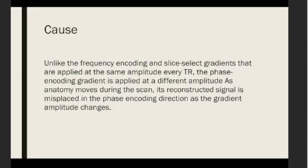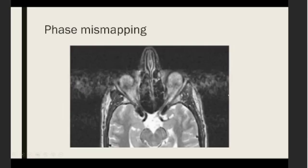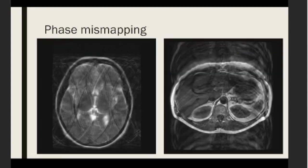Frequency encoding and slice select gradients are applied at the same amplitude every repetition time, but the phase encoding gradient is applied at a different amplitude. As anatomy moves during the scan, its reconstructed signal is misplaced in the phase encoding direction as the gradient amplitude changes. Examples include ghosting from a patient moving their eyes, from a patient tilting their head, and from respiratory motion or breathing.